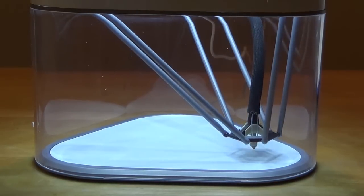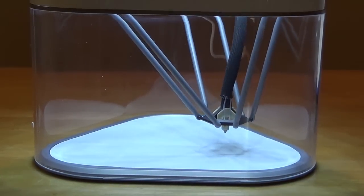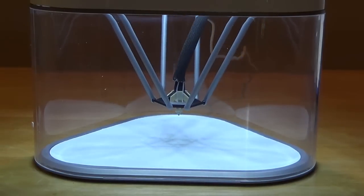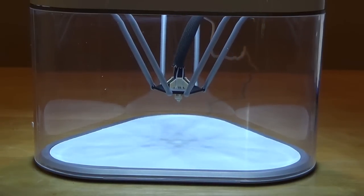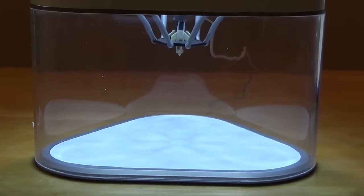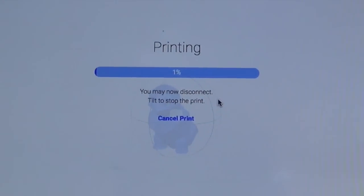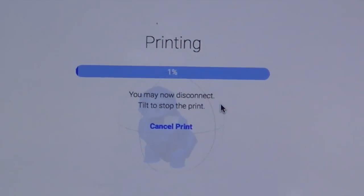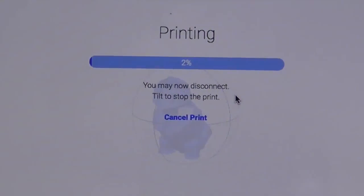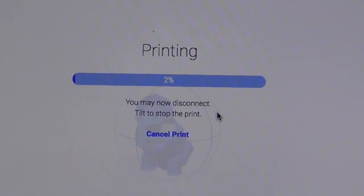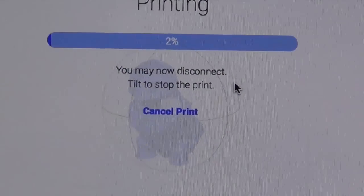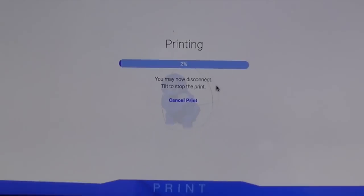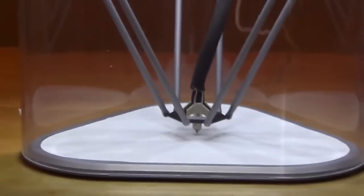It does have a status bar. Looks like you can disconnect so you can continue using your laptop while it prints. It also says tilt to stop the print, so I guess all you have to do to stop the print is tilt the machine, which is interesting. It has now started the print.